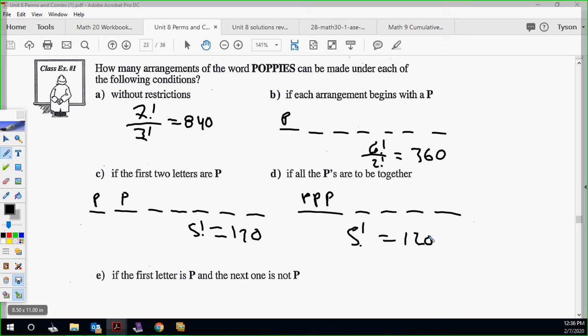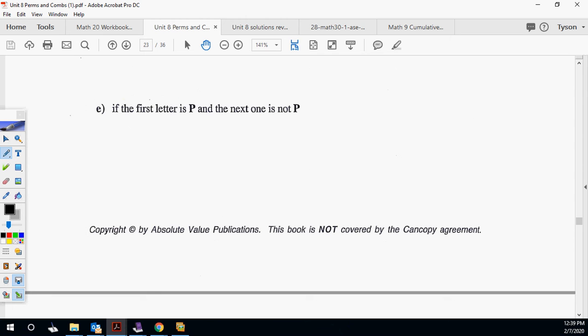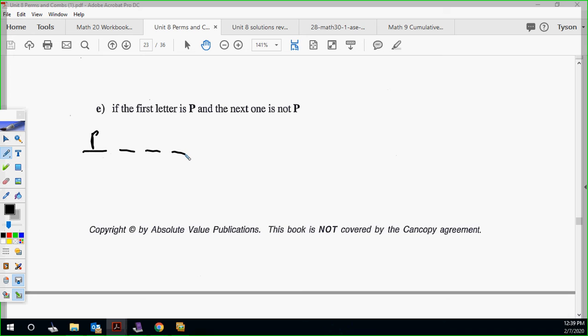If the first letter is P and the next one is not P. They're giving you two restrictions to keep into account. We know the first letter is P, locked in. We have 6 letters left. This can't be a P. Of the 6 left, how many are possible here? Four. Then it's going to go 5, 4, 3, 2, 1. Essentially it's 5 factorial. But then you have to ask, is there any opportunities for repetitions? How many P's are in here? So it's over 2 factorial. That calculates to be 240.